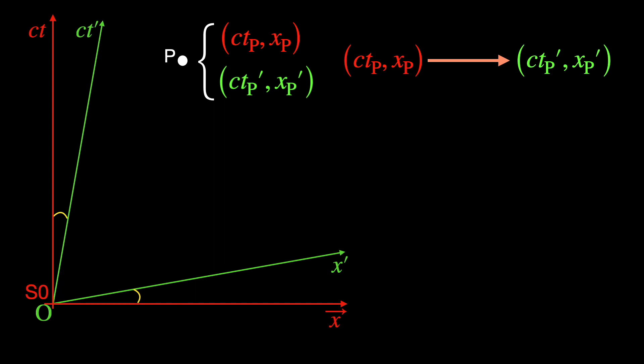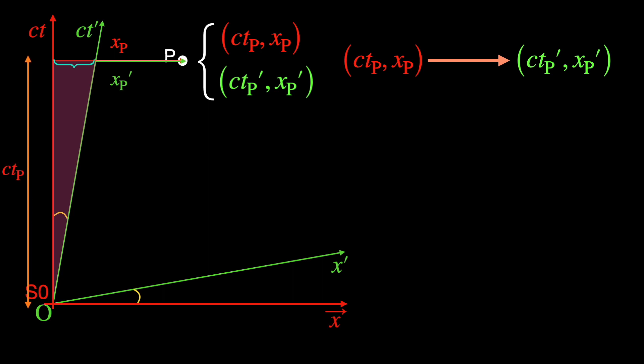Let us do it for the space coordinate x prime p first. Very naively just looking at this diagram x prime p is smaller than xp by a line segment indicated by the curly bracket. This segment is the perpendicular arm of a right angle triangle whose base is the time coordinate ctp of event p in the rest frame and the base angle theta is tan inverse of v by c. So x prime p is xp minus tan theta times ctp which reduces to xp minus v times tp once we use the value of tan theta which is just v by c.